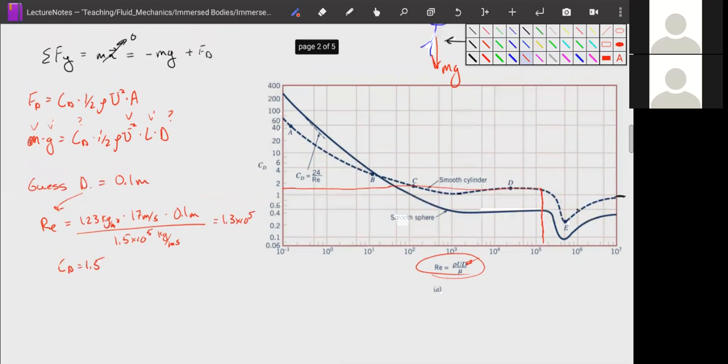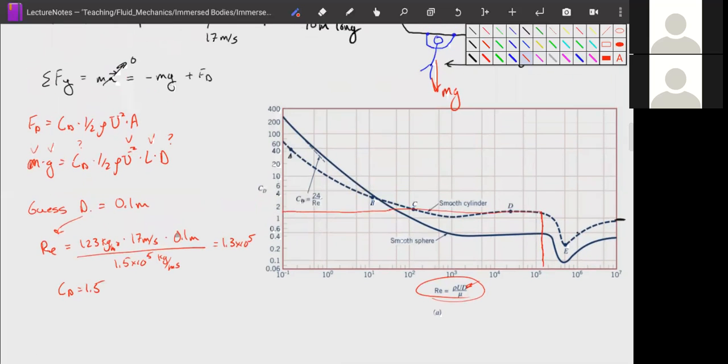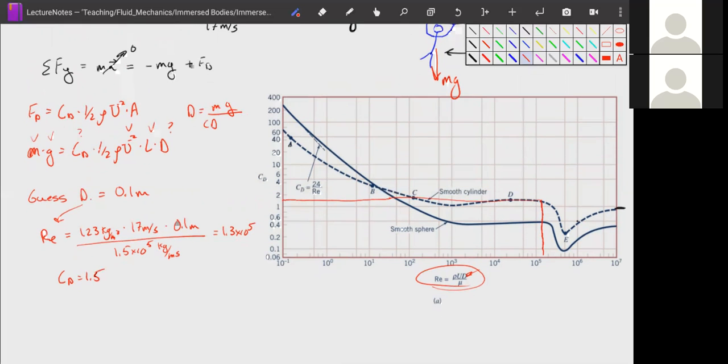So let's rearrange our equation to solve for d, because remember, whenever we do this, we have to rearrange our equation. We plug in a guess for our friction factor or drag coefficient in this case, and solve for the thing we're solving for. And so in that case, our diameter is going to be equal to mg divided by cd times 1.5 rho u squared L. So we plug in our drag coefficient that we just found into this equation and solve for our new d.